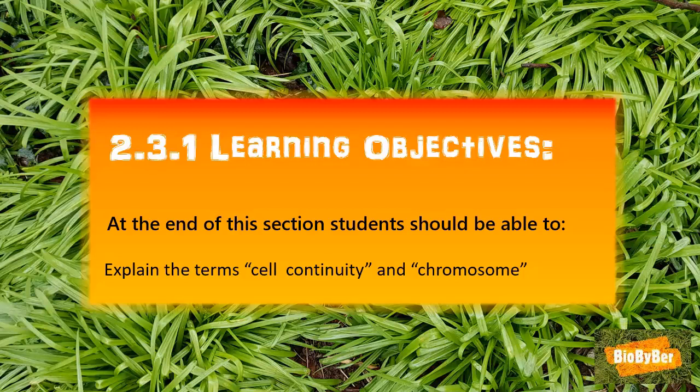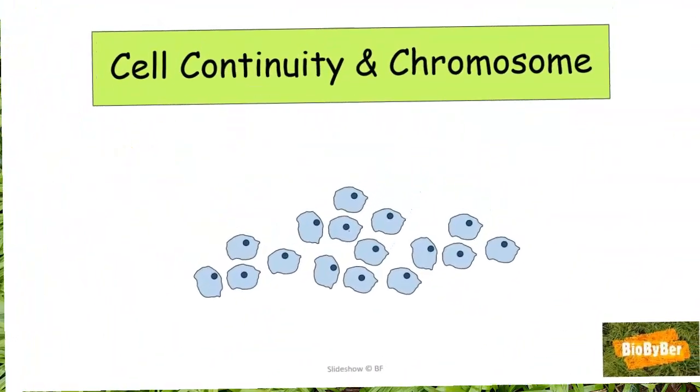Hi biologists, let's start by looking at the learning objectives for this section. At the end of this section, following the biology syllabus, you should be able to explain the terms cell continuity and chromosome. What does this actually mean? What are we trying to understand? It's very straightforward — all you have to be able to do is explain the meaning of the terms cell continuity and the meaning of the term chromosome.